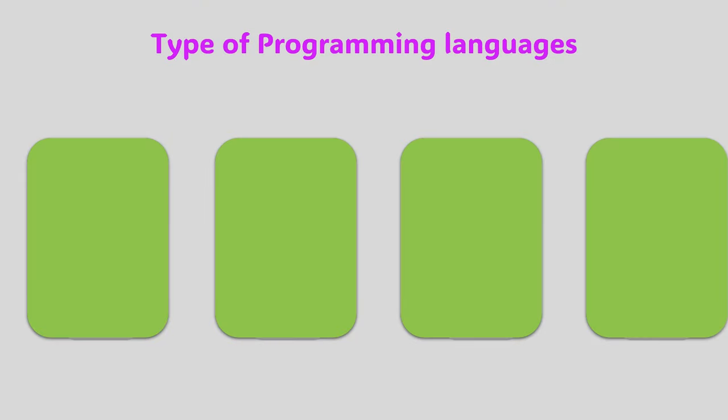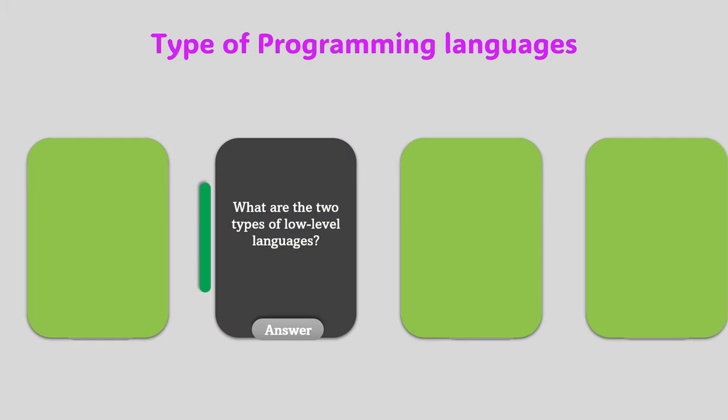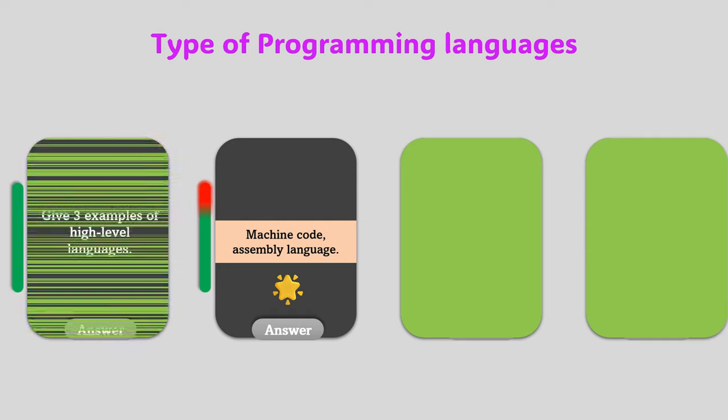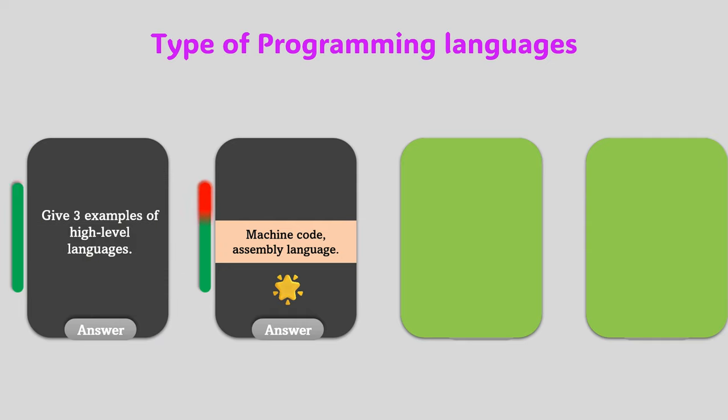Now we are done with the topic. Let's have a short quiz. Question number one: What are the two types of low-level languages? Number one is machine code. And number two is assembly language.